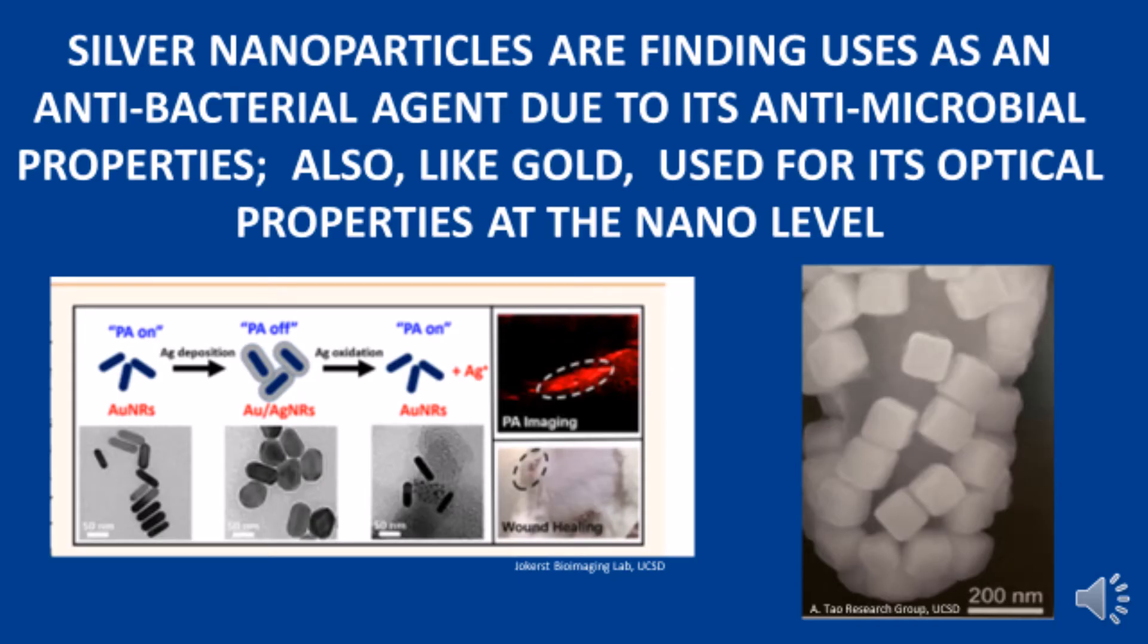Like gold, silver nanoparticles can absorb or transmit various wavelengths of light in the visible light spectrum, producing a variety of colors. They too are finding uses for their unique optical and electrical properties. However, another benefit of silver is its antimicrobial property. Silver has long been used for wound care and as an antibacterial agent due to the interaction of the silver plus ion with microbes. In the image at the left, we observe how silver is delivered to a wound as a coating on a gold nanorod, as the gold provides the capability to image the affected area being treated.